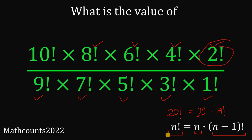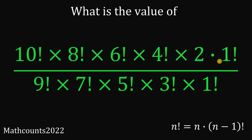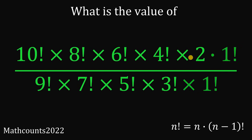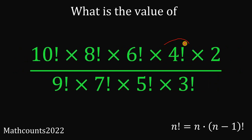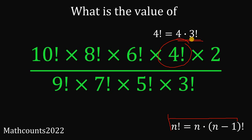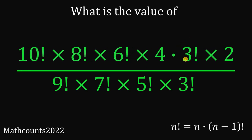Let's focus on 2 factorial. Using this identity, 2 factorial can be written as 2 times 1 factorial. So we can replace this 2 factorial with 2 times 1 factorial, and we can now cancel out 1 factorial on the numerator and 1 factorial on the denominator. Next, let's focus on 4 factorial. Using this identity again, 4 factorial equals 4 multiplied by 3 factorial, so we can replace 4 factorial with 4 times 3 factorial, and cancel out 3 factorial on the numerator and denominator.